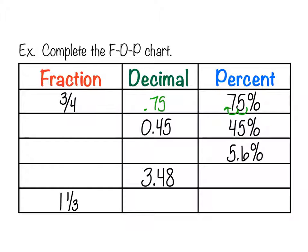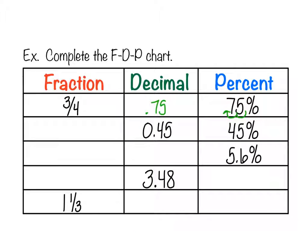For the next line, 45 percent or 0.45 — to write it as a fraction, take 45 and write it over its place value, which is 100. Both numbers reduce by 5: 45 divided by 5 is 9, and 100 divided by 5 is 20, so that's 9/20.